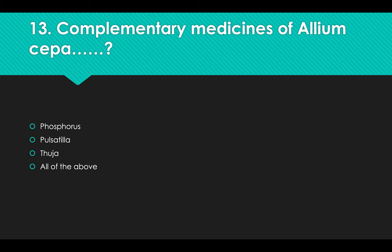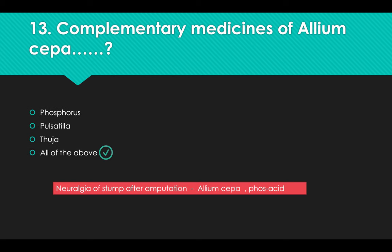Complementary medicines of Allium Cepa: Options: A) Phosphorus, B) Pulsatilla, C) Thuja, D) All of the above. Answer: Option D, All of the above. For neuralgia of stump after amputation, medicines are Allium Cepa and Phosphoric Acid.